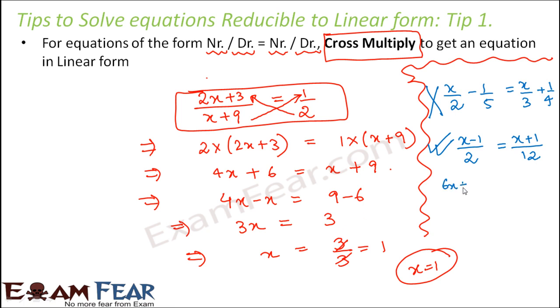Again let's take one more example: 6x plus 1 divided by 3 plus 5 is equal to x minus 9 by 2.